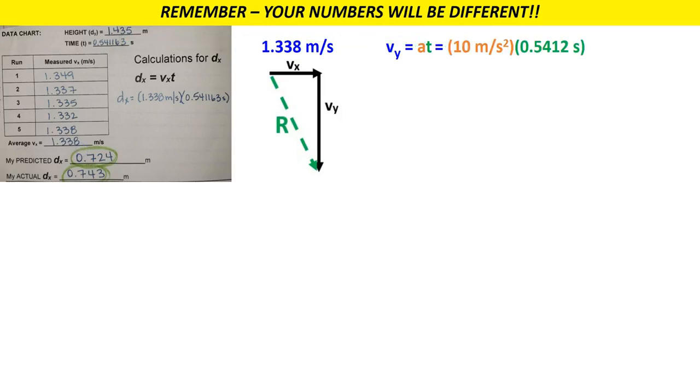So we get 10 meters per second squared times, in my case, 0.5412 seconds, which gives us a Vy of 5.412 meters per second. And that is the second leg of my triangle here. So again, I would recommend you go on and plug that in on your diagram as well.